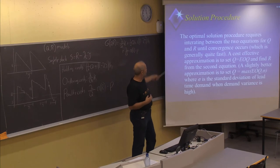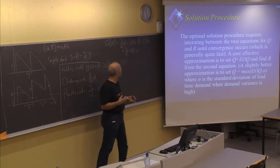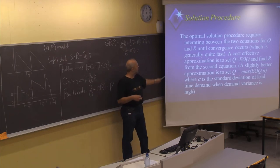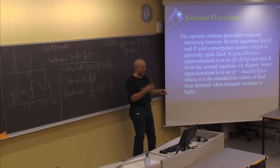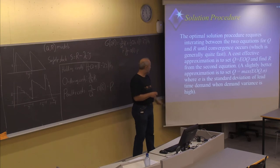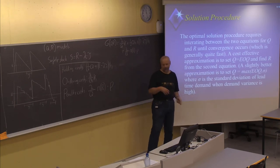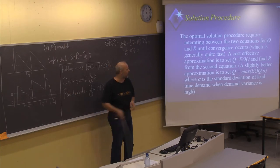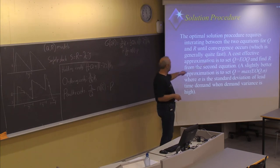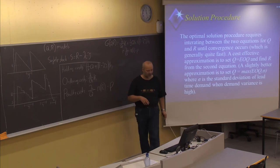This requires iterating between the two expressions until they converge. Usually this happens within one, two, or three iterations. Cost-effective approximations start with the EOQ value, assuming we have the same parameter values, and then alternate updating Q and R.